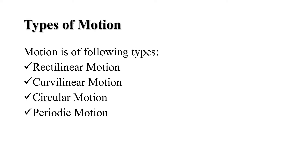Students, we have discussed in the previous class that motion along a straight line, such as the motion of a car along a straight road, is called rectilinear motion. Motion along a curved line is called curvilinear motion, and motion along a circular path is called circular motion.